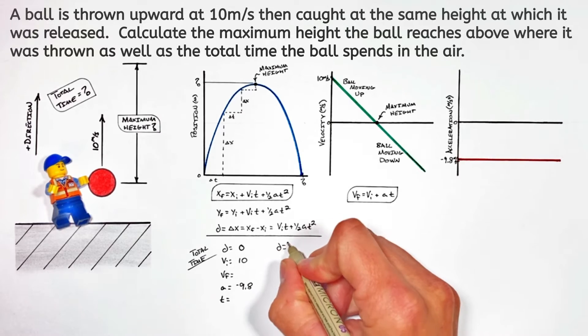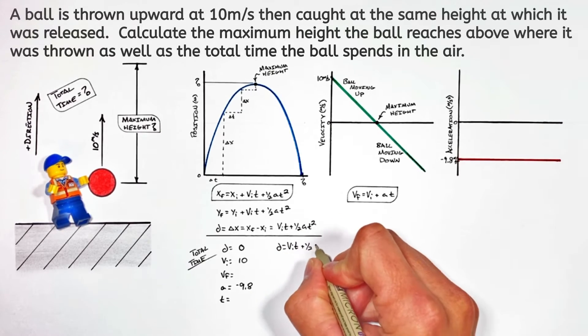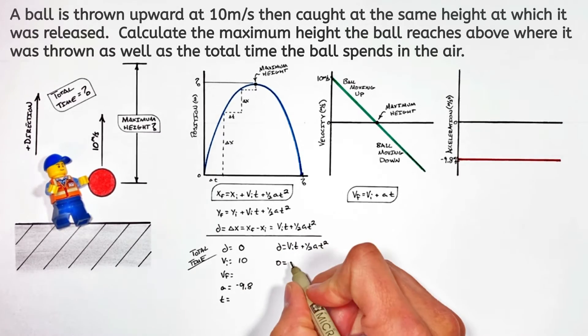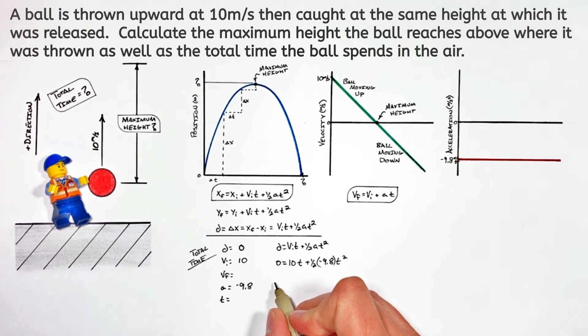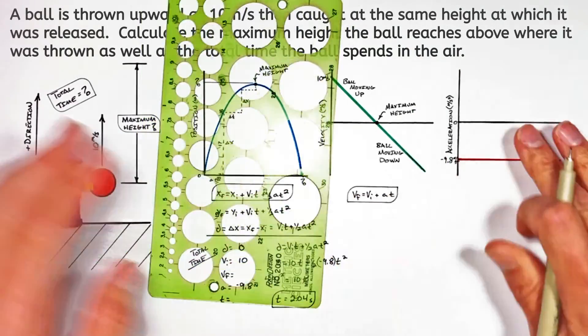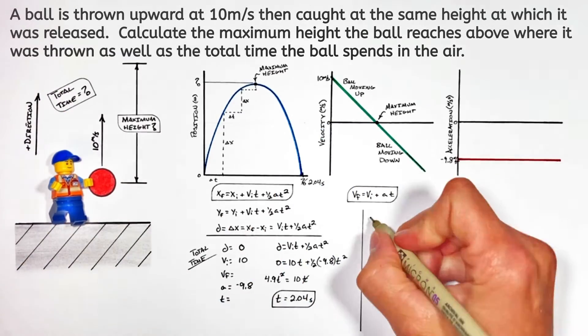We can use the displacement equation to solve for the total time this ball is going to spend in the air. Plugging these values into the displacement equation, we find the ball is going to land 2.04 seconds after it's thrown upward.